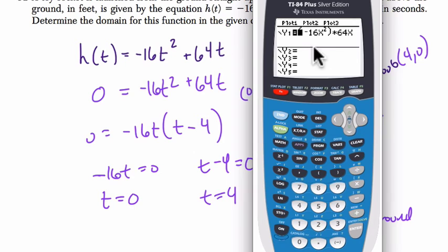If we graph this thing, oops, I made a mistake. Here I wrote times 64x, we should do +64x. So make sure you have the right operation. Don't do what I just did. Plus.